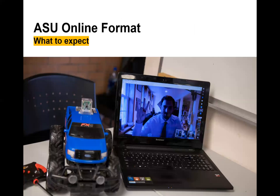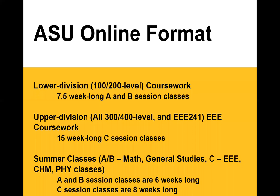ASU Online uses Canvas, and all lower division 100 and 200 level coursework is in seven-and-a-half-week A and B session classes. A and B sessions in fall and spring overlap the full 15-week C session classes. When you reach junior and senior level, all 300 and 400 level courses are in the full 15-week C session, including EEE 241 — electromagnetics, a second-semester sophomore class — which faculty require in a 15-week session due to content intensity. In summer, the six-week A and B sessions offer math, humanities, and social behavioral studies; the eight-week C session offers engineering, chemistry, and physics.